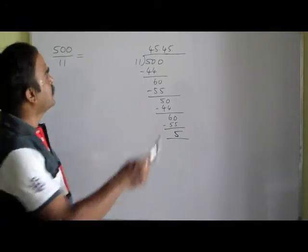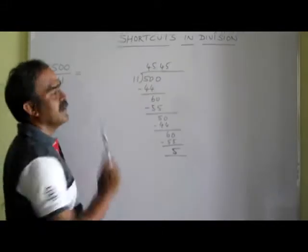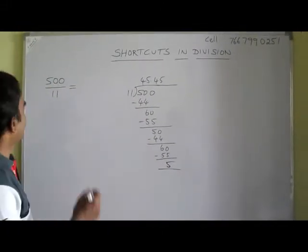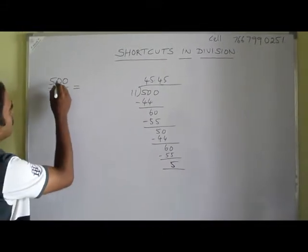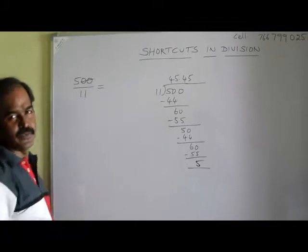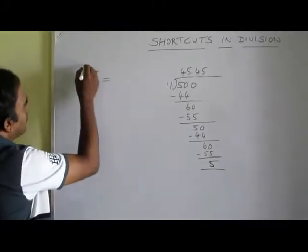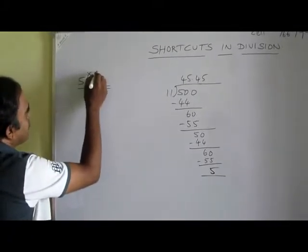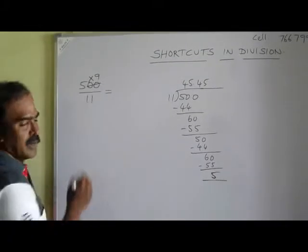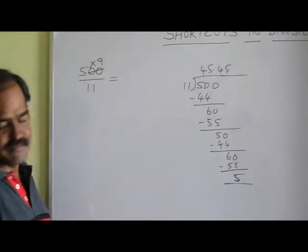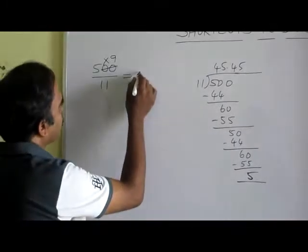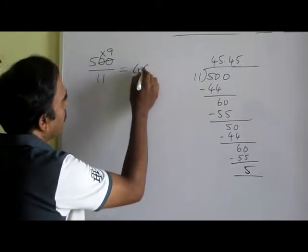How to do this same division using shortcuts? Just strike out the two zeros and multiply by 9. What is 5 times 9? 45.